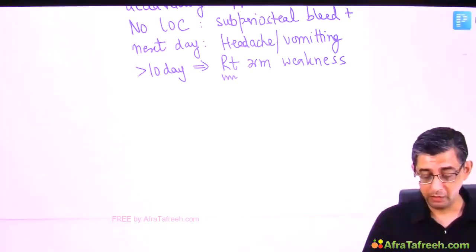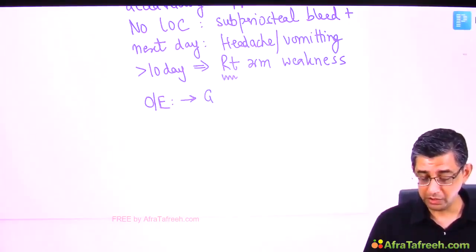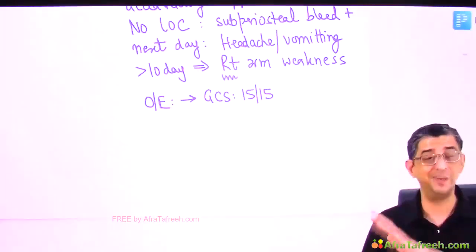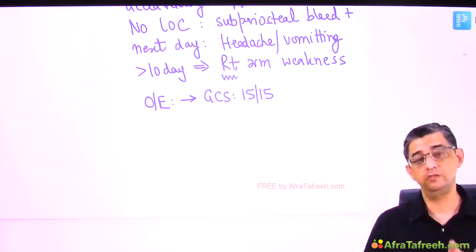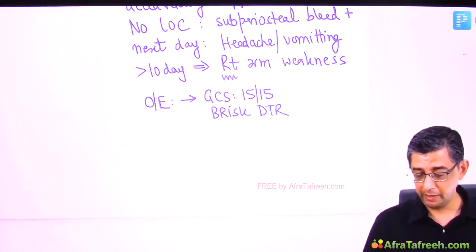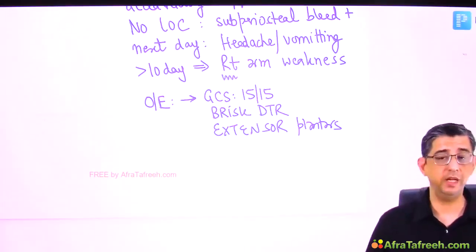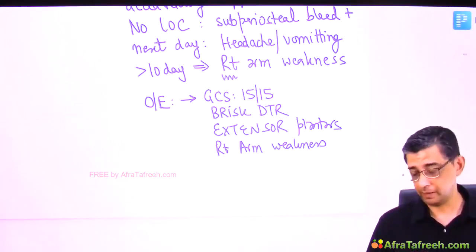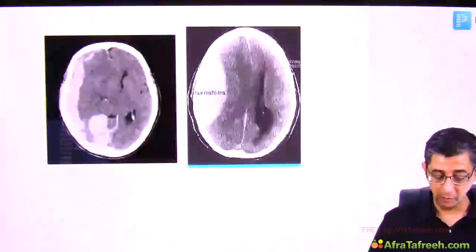In the outpatient department, her GCS is 15/15 — she's talking normally, recognizing her son, oriented to time. On examination: brisk reflexes and extensor plantars. There is focal neurological deficit — right arm weakness of 1-2/5. A CT scan is ordered. Let me hand-draw the CT scan appearance: this is a subdural hemorrhage.